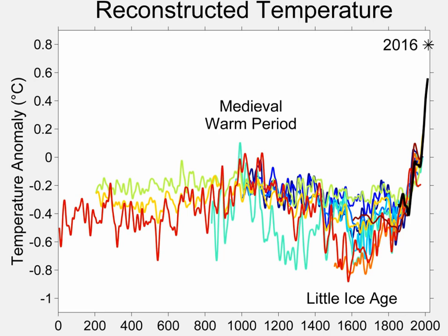There is no consensus regarding the time when the Little Ice Age began, but a series of events before the known climatic minima has often been referenced. In the 13th century, pack ice began advancing southwards in the North Atlantic, as did glaciers in Greenland. Anecdotal evidence suggests expanding glaciers almost worldwide. Based on radiocarbon dating of roughly 150 samples of dead plant material with roots intact, collected from beneath ice caps on Baffin Island and Iceland, Miller et al. state that cold summers and ice growth began abruptly between 1275 and 1300, followed by a substantial intensification from 1430 to 1455.